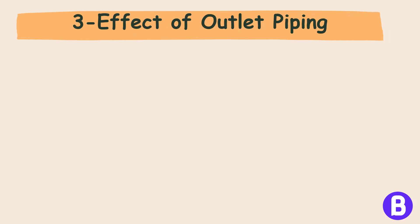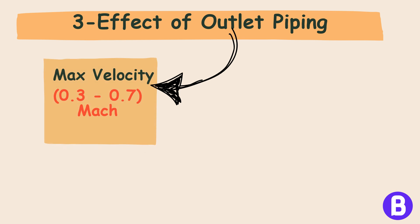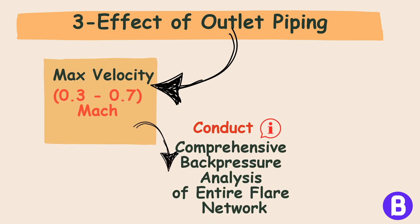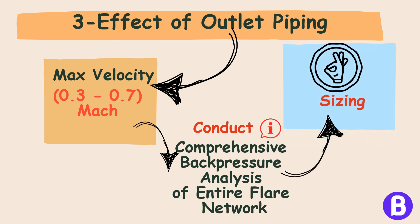Therefore, the outlet piping should have a maximum velocity ranging from 0.3 to 0.7 Mach, and a comprehensive backpressure analysis of the entire flare network must be conducted to ensure that the outlet piping is appropriately sized.